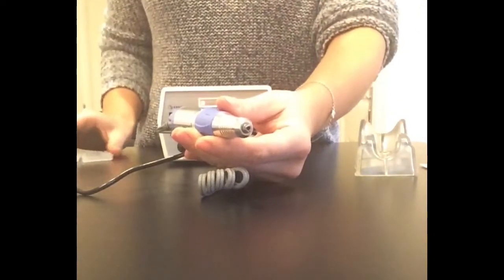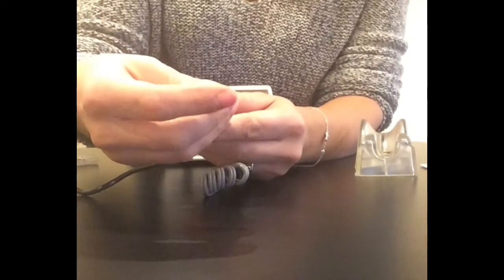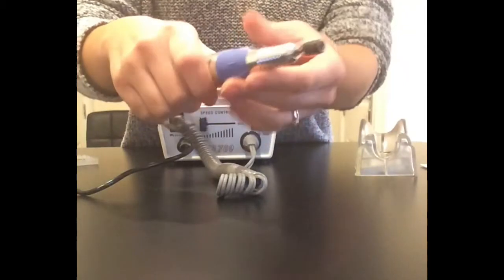So we're going to put a bit in. I've just put the sanding band onto the bit. Insert it into the drill and lock.